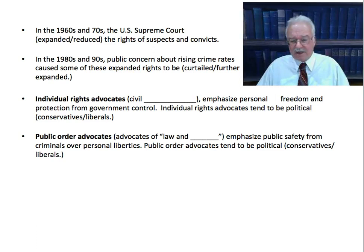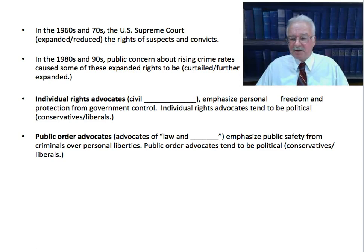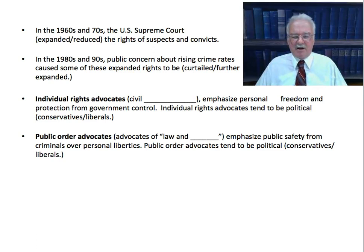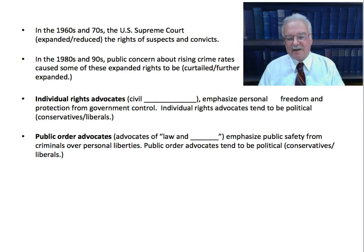Crime increased for a number of reasons — not necessarily specifically related to the greater concern for individual rights of criminals and suspects. Other factors included the number of people in the population in the crime-prone years, roughly 18 to 30 years old, who commit a lot of street crime, and economic factors. Regardless, in the 80s and 90s, crime went up, people were concerned, and some new court decisions and laws reduced some of the gains made by the Warren Court in the 60s and 70s.